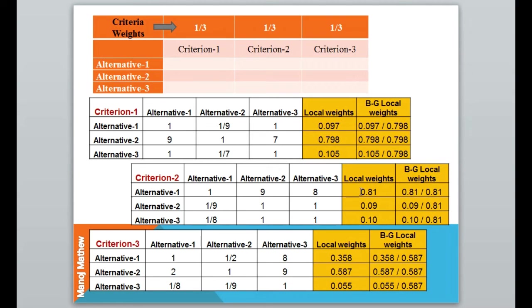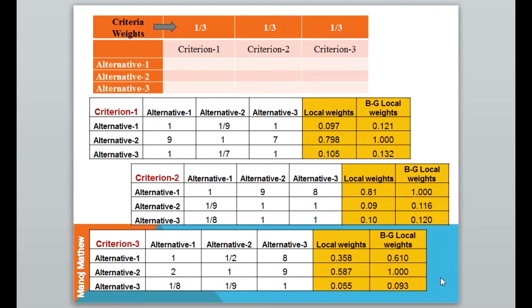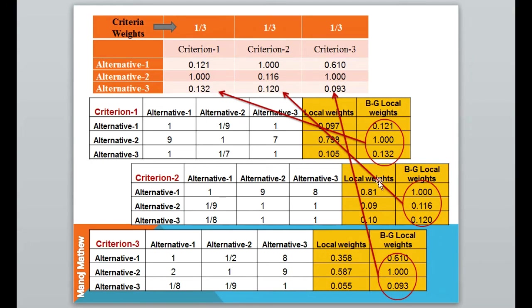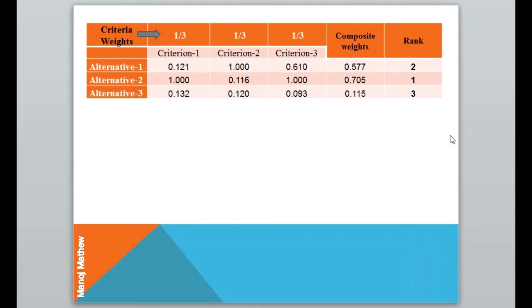Similarly, in the second pairwise comparison matrix, 0.81 is the maximum value, so we divide all values by 0.81. We do the same for the third pairwise comparison matrix. On solving, you get these BG local weights, which are then substituted into the decision matrix — rather than the normal weights used earlier. On solving, the composite weights are obtained, giving a rank: alternative 1 is 2nd, alternative 2 is 1st, and alternative 3 is 3rd.